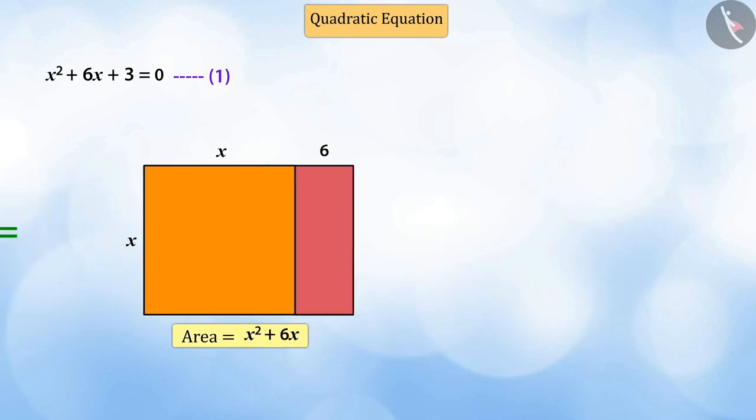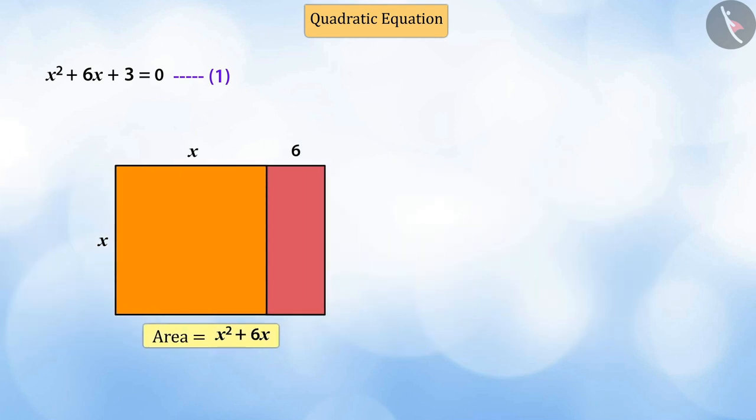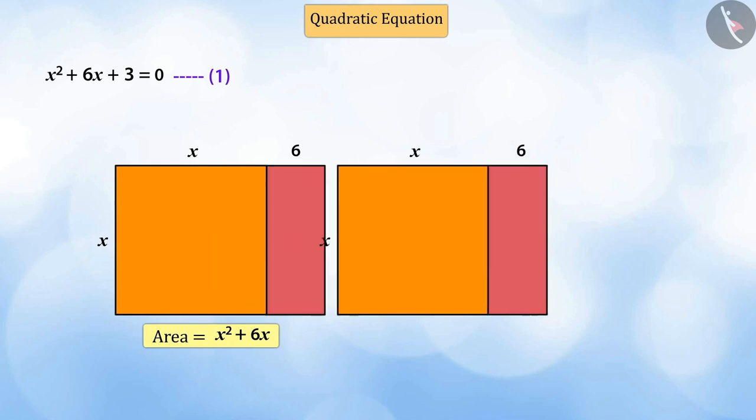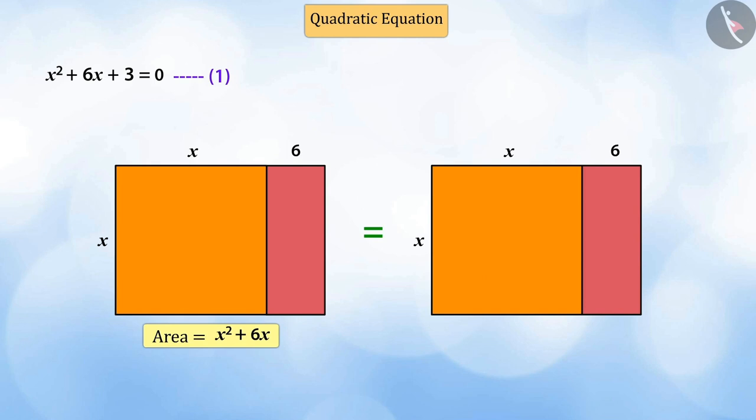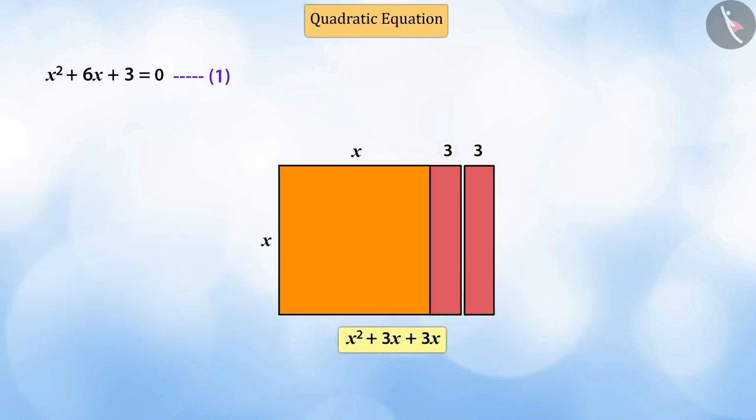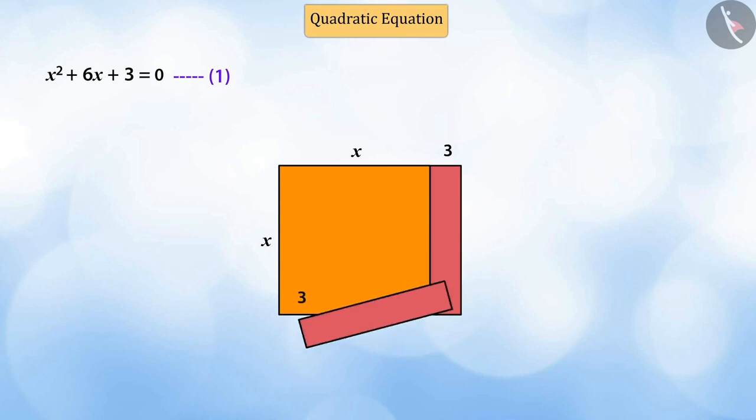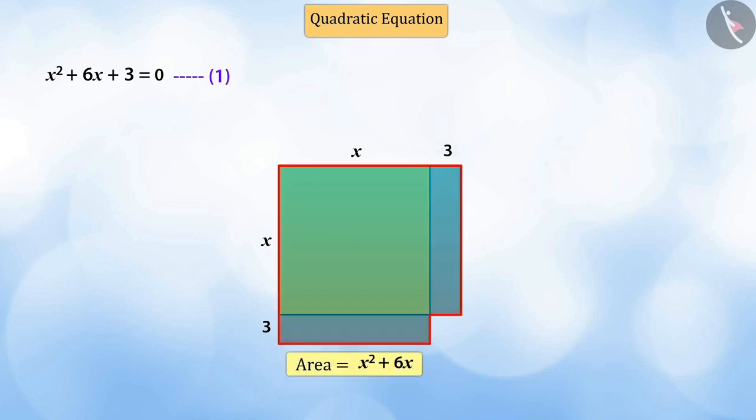Now, we can divide the small rectangle, which is part of the new rectangle, into two equal rectangles in this manner. Now, let's arrange the rectangular pieces in this way. On doing so, we get a new shape from this, whose total area is still equal to x square plus 6x.